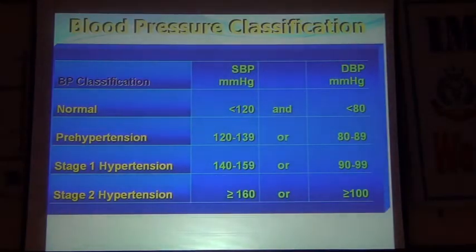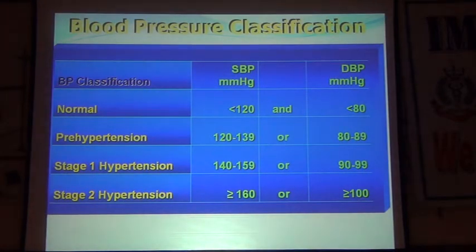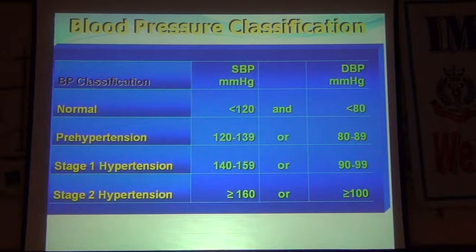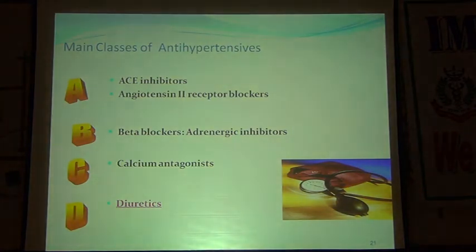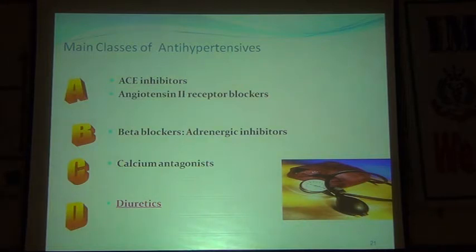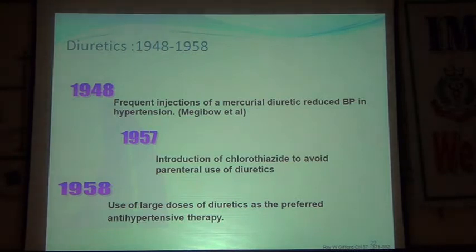For classification, JNC7 defines: normal BP, prehypertension between 120-139 systolic and 80-89 diastolic; Stage 1 hypertension is 140-159 systolic and 90-99 diastolic; Stage 2 hypertension is 160 or above systolic and 100 or above diastolic. In our treatment armamentarium — ABCD — we have alpha blockers, beta blockers, calcium channel blockers, and diuretics. We will focus on diuretics.